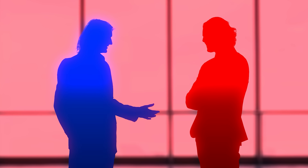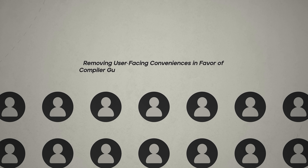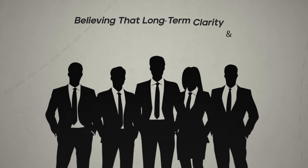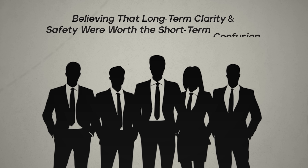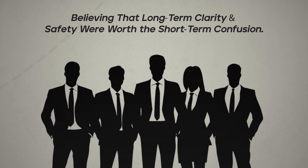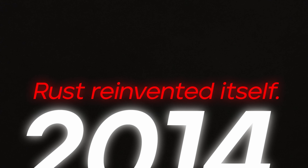This phase was not without its internal friction. As Rust shed features like type state and green-threaded concurrency, some early contributors and adopters pushed back. There were spirited debates over what Rust should be — whether it was becoming too minimal or too complex in its type system. Some felt that removing user-facing conveniences in favor of compiler guarantees risked alienating developers. But the team pressed on, believing that long-term clarity and safety were worth the short-term confusion. Between 2012 and 2014, Rust reinvented itself, doubling down on ownership and removing anything that didn't align.